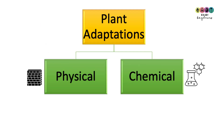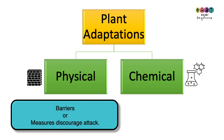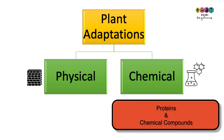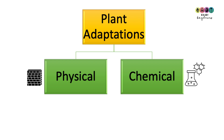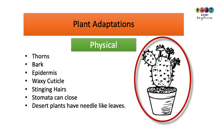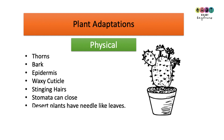Physical adaptations can be thought of as barriers or deterrents — things to stop other organisms going near the plant. Chemical adaptations are usually proteins or other chemicals produced inside the plant. Some examples of physical adaptations include thorns, bark, epidermis, waxy cuticle, stinging hairs, stomata that can close, and desert plants like the cactus which have needle-like leaves that prevent water loss.